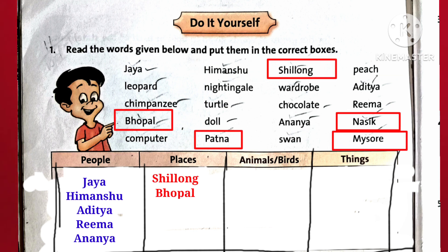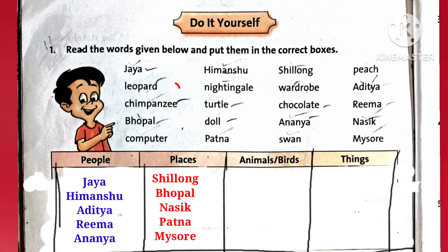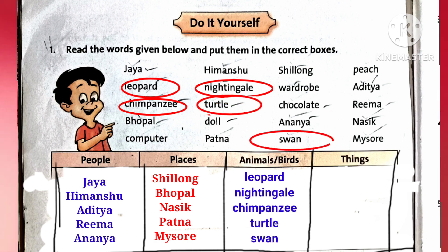Now the places: Shillong, Bhopal, Nasik, Patna, Mysore. Now the animals and birds: Leopard, Nightingale, Chimpanzee, Turtle, Swan.